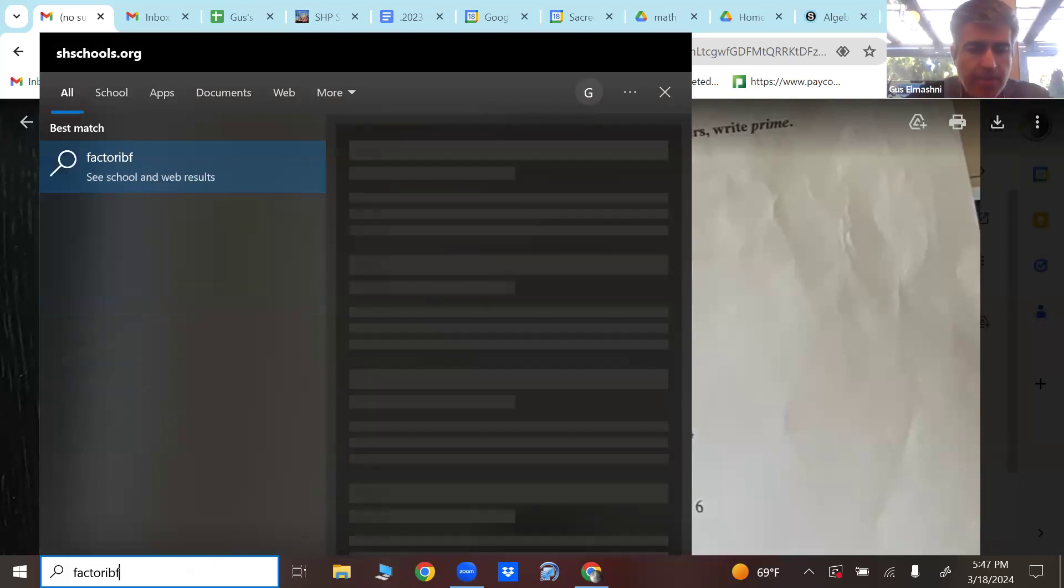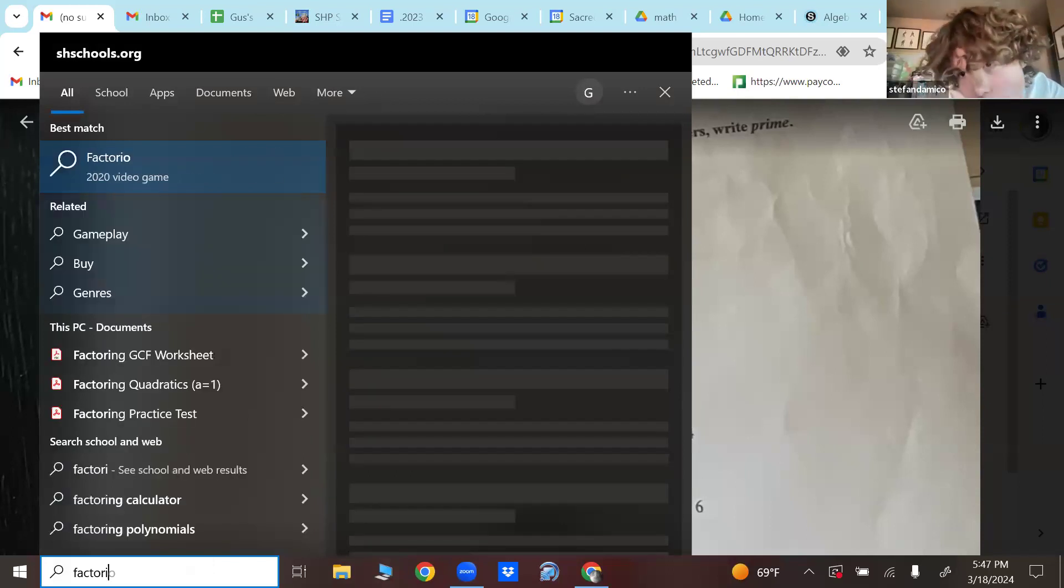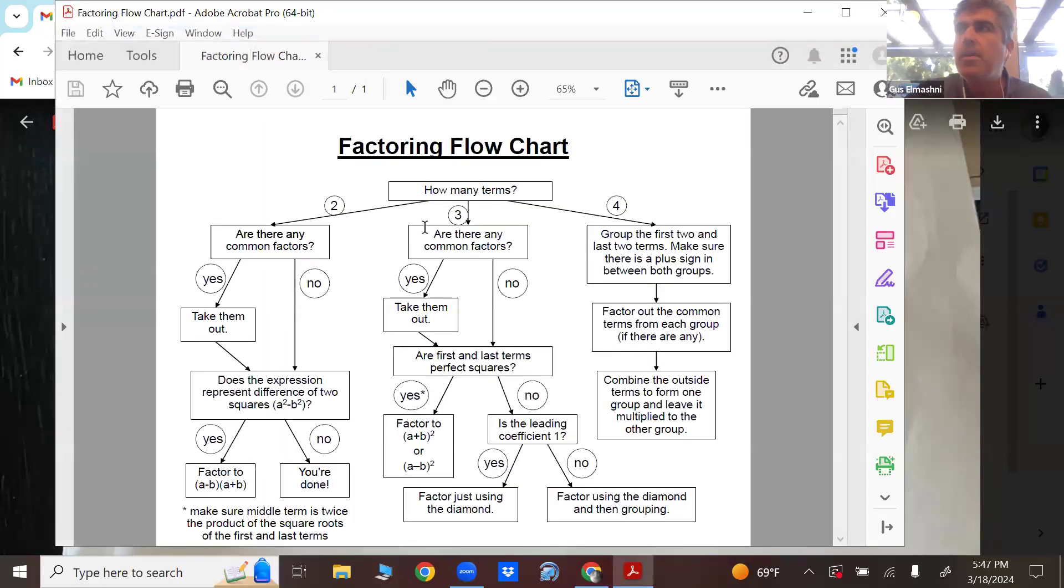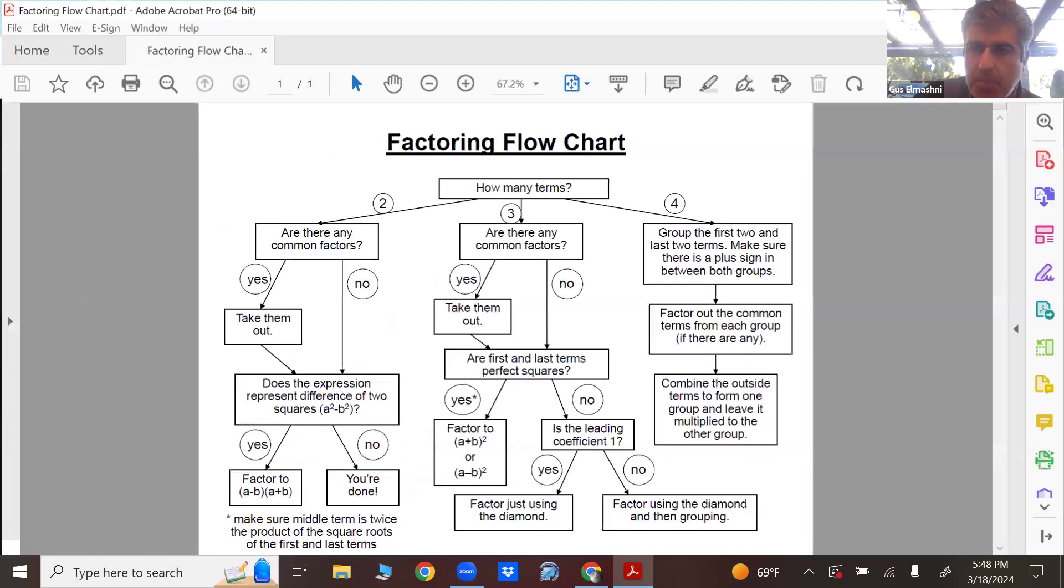Let me pull up my factoring flow chart. Common factors, pull them out. And then after that, the first lesson is perfect squares. If not, then use a diamond and some of the techniques. It's pretty much the same thing.